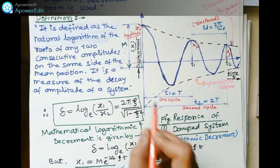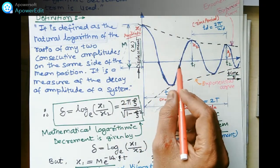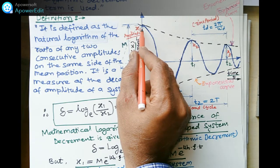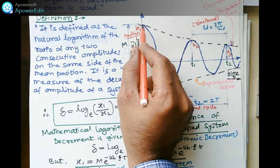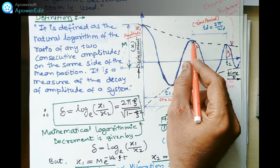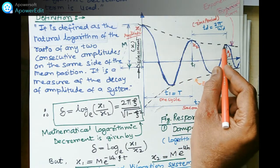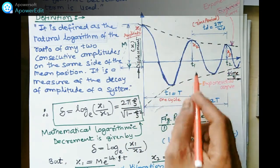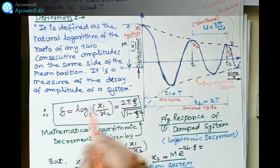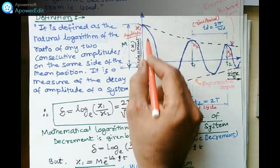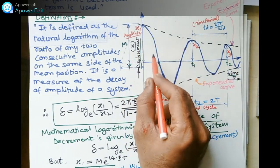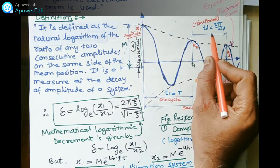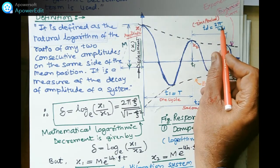To understand this, an amplitude versus time diagram is drawn for the damped curve. x1 is the displacement at the start — the extreme position. The system completes one full cycle, then moves again with decreasing amplitude. The damped curve decreases exponentially, slowly moving toward the mean position. The amplitude goes from x1 to x2, which is lower than x1. The time period is found using the formula 2π/ωd.